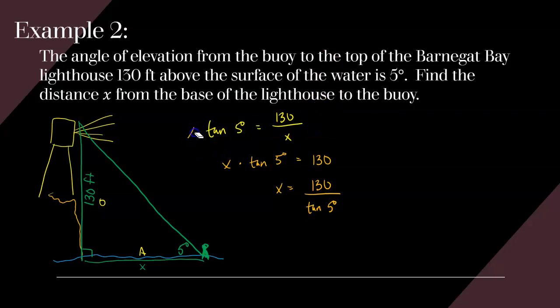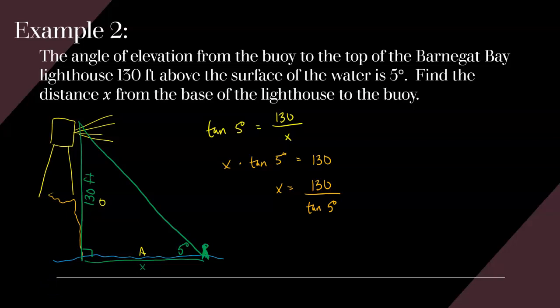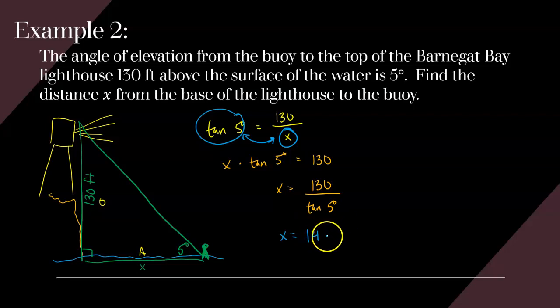Notice what changed: the X and the tangent of 5 degrees switched locations. There's a useful trick — if you ever have X in the denominator, you can swap the X with everything on the other side of the equal sign (the entire tangent of 5 degrees, not just the 5). So X equals 130 divided by tangent of 5 degrees. Type that into your calculator and you get approximately 1,486 feet, rounded to the nearest foot.